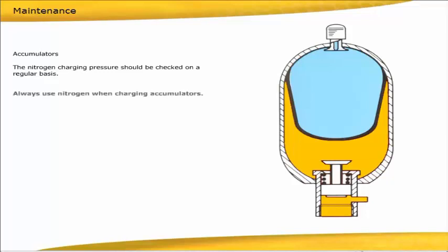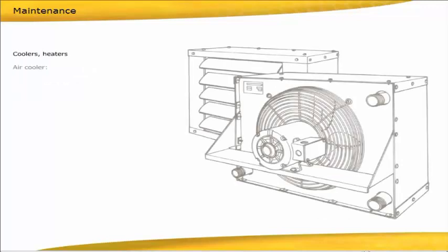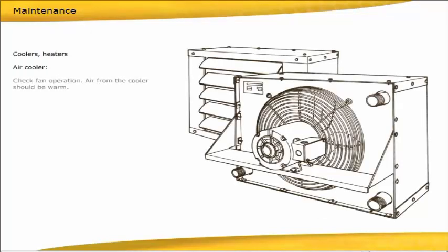Coolers and heaters. Air cooler: Check fan operation. Air from the cooler should be warm. Water cooler: If the cooler is not efficient, high oil temperature, the cooler may be clogged. Heaters: Check set point and operation.